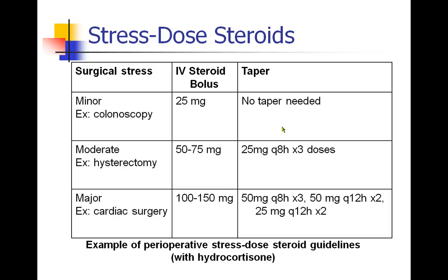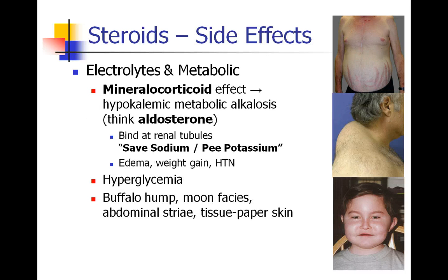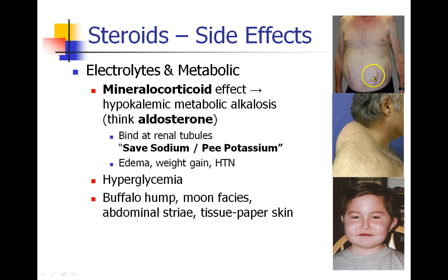In my practice, this is something I usually discuss with the surgical team, especially if the patient's going to remain in-house and the surgeons are going to be managing their postoperative medications. There are some side effects of steroids you should be aware of. Some of them involve the electrolytes — there's a mineralocorticoid effect causing hypokalemic metabolic alkalosis. The patient will retain sodium and water, which can lead to edema, weight gain, and hypertension. They can lose potassium, leading to hypokalemia. Patients may also become hyperglycemic. Other findings in patients who chronically take steroids include the buffalo hump, the deposition of fat behind the neck, moon facies, this wide round fat face, abdominal striae with red striations on the abdomen, and very thin tissue paper-like skin.